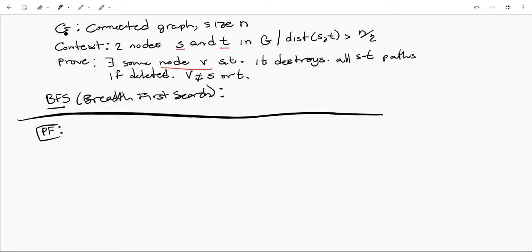So what we've got here is a graph G, it's a connected graph of size N. Some context for this problem: we have two nodes S and T in G, such that the distance between those two nodes is strictly greater than N over 2.